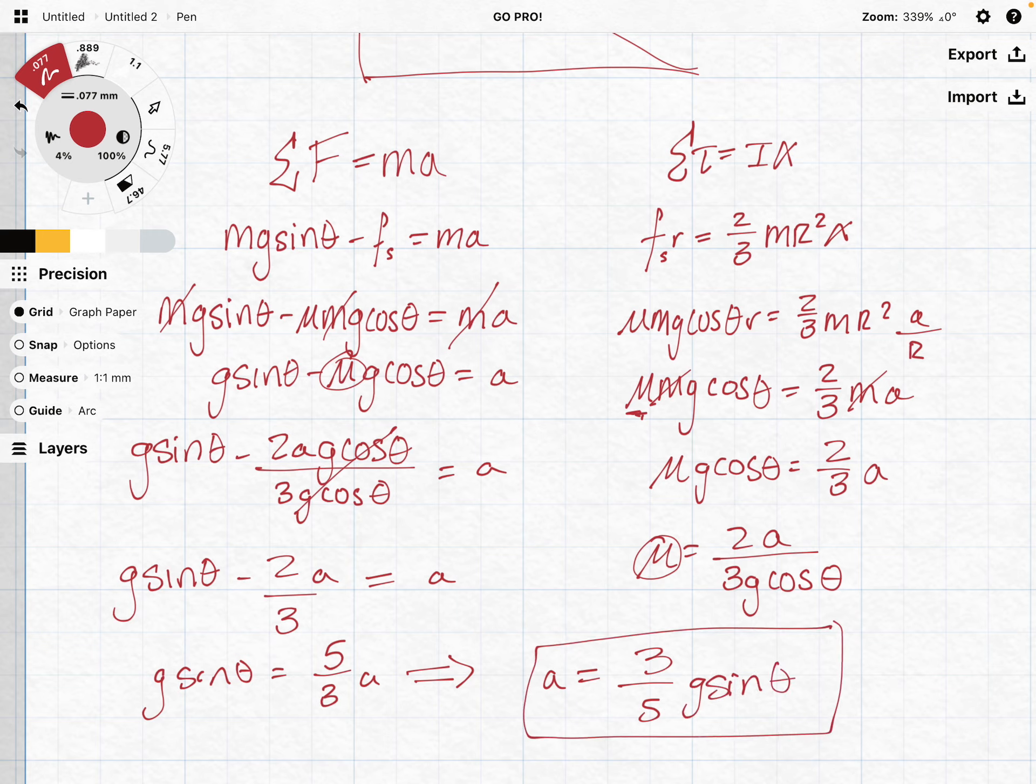Hopefully this helps. You can do this for any of them—obviously you'd have to change your moment of inertia to different versions like two fifths or one half mr squared. This is how you would determine which one's going to accelerate the fastest. You could use energy to find out who would have the fastest velocity at the end if you've done energy yet.